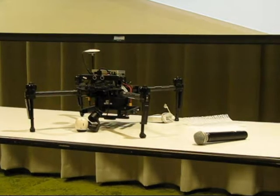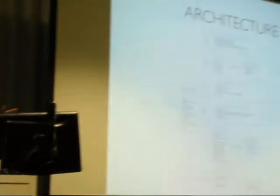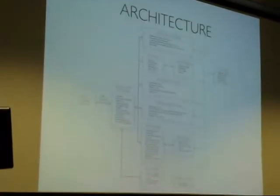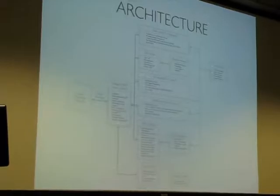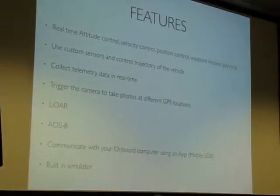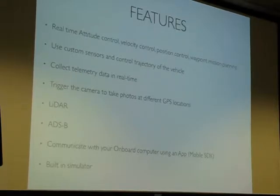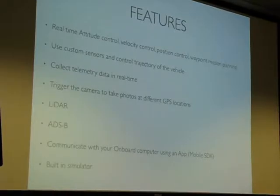This is a basic architecture of what it looks like. On the left side is the flight controller, right next to it is the core library, and on the right side are the applications. There are several applications we have right now. The SDK features include real-time attitude control, velocity control, position control, and the ability to run different waypoint missions.